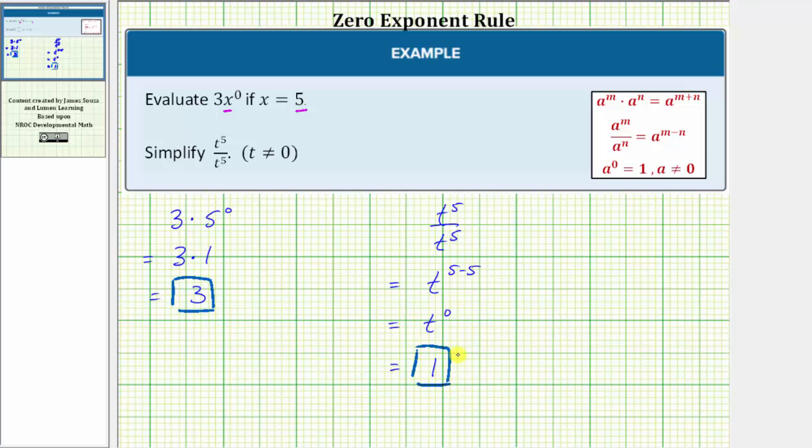And this should make sense because, looking at the original problem, we have t^5 divided by t^5. Anything divided by itself is equal to 1, as long as we don't have zero divided by zero. This is the reason why we have the condition that t can't equal zero. I hope you found this helpful.